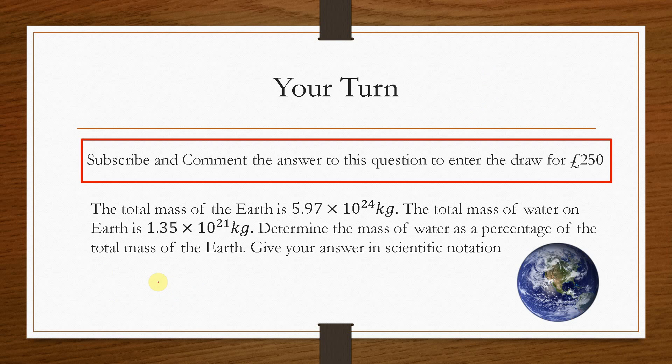So, now it is your turn. So as part of our £250 giveaway every month, we are giving you the opportunity to apply everything that you've learned in this lesson and in with the chance of winning £250. So, the question here says, The total mass of the Earth is given by 5.97 times 10 to the 24 kilograms. The total mass of the water on Earth is given by 1.35 times 10 to the 21 kilograms. We need to determine the mass of water as a percentage of the total mass of the Earth. And we need to give your answer in scientific notation.